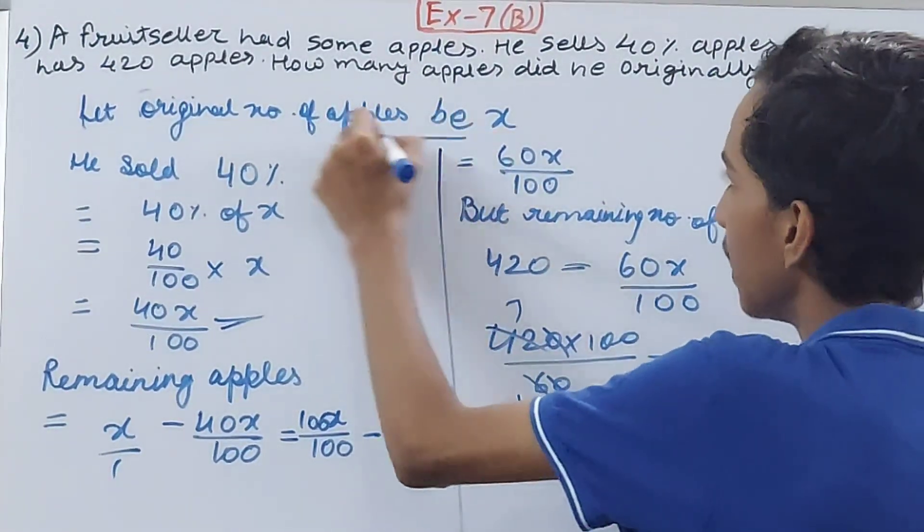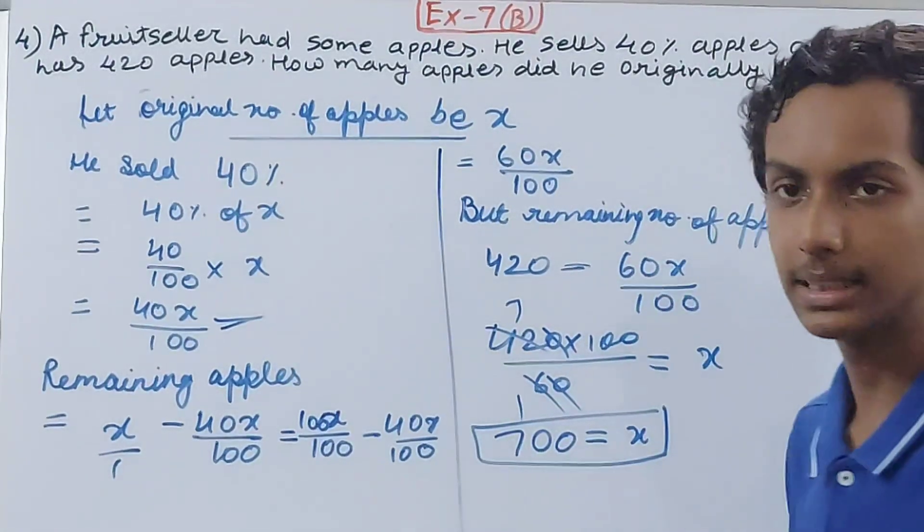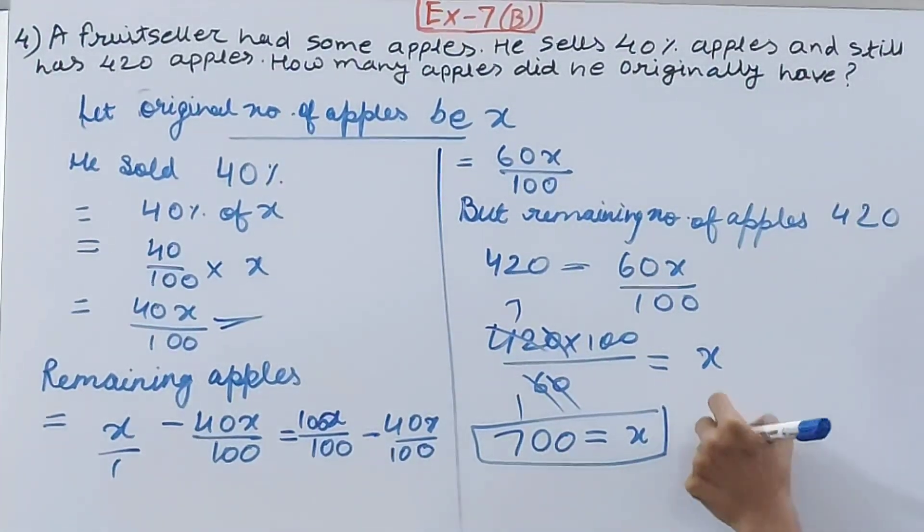What was x? x was original number of apples that was asked in the question. So what will your answer be? 700 apples, right? Originally he had 700 apples.